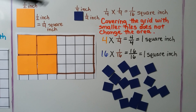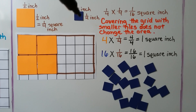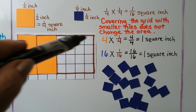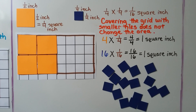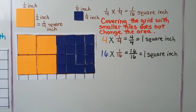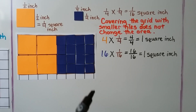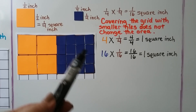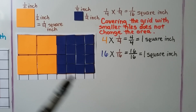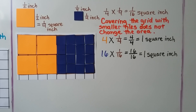This whole thing would be one square inch. Now using this little blue one, with one sixteenth square inch area for each one, we can fill these little squares into this four by four grid. Both grids are the same size, but now we used sixteen of these little blue ones, each with one sixteenth square inch area. We do sixteen times one sixteenth — we get the same numerator and denominator — so this is also equal to one square inch. Covering the grid with smaller tiles does not change the area. It just changes how many little squares we have.